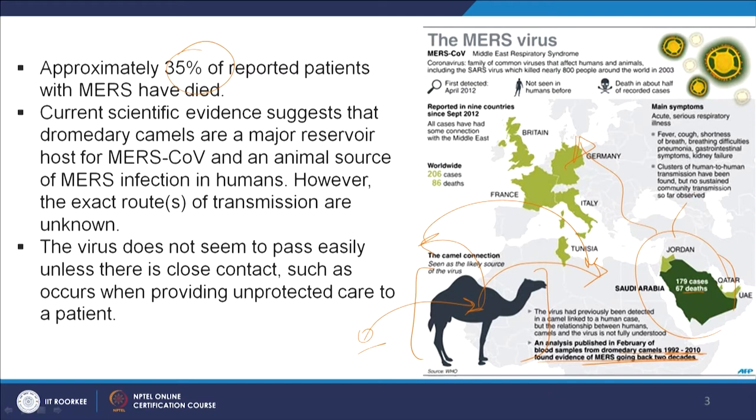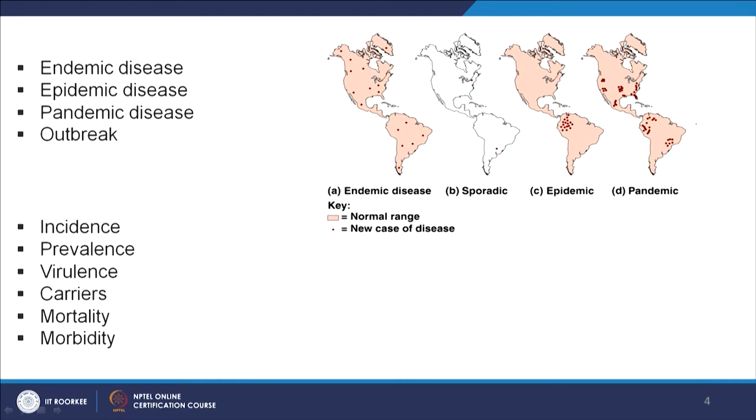Now is a good time to understand some key terminology used in epidemiology that will help you understand the spread of diseases. Remember that diseases usually do not respect geographical and political boundaries — MERS does not know that it is called Middle East Respiratory Syndrome; it will proliferate wherever it can carry itself. The four important terms are: endemic disease, sporadic disease, epidemic, and pandemic.